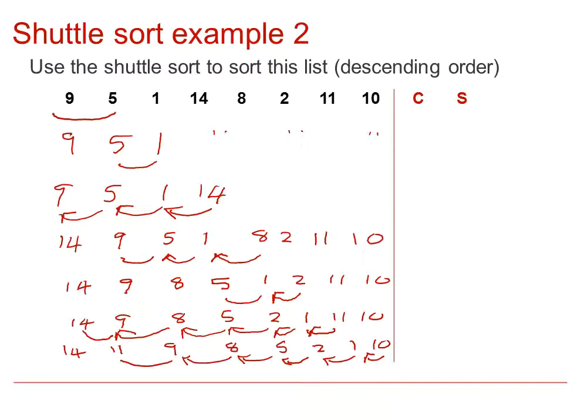Looking then at comparisons and swaps, we had 1 comparison and no swap, and no swap. 3 comparisons and 3 swaps. 3 comparisons and 2 swaps. 2 comparisons and 1 swap. You will note that the number of swaps adds up to 16, and the number of comparisons was 22.